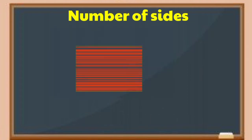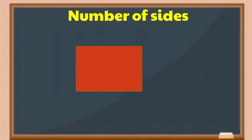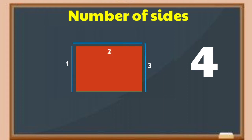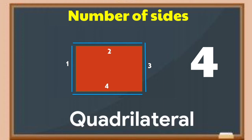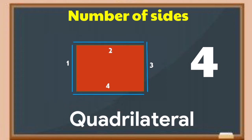Figure 2. Yes! It has 4 sides — 1, 2, 3, 4. The figure on screen is called a quadrilateral. From the word 'quad' meaning 4. A quadrilateral has 4 sides.